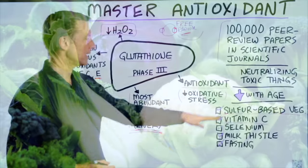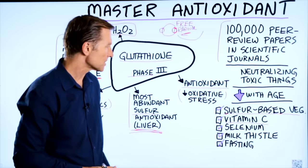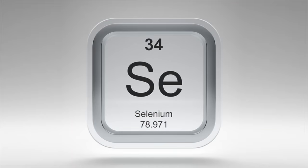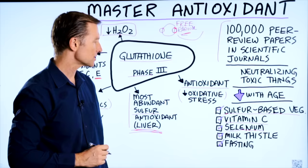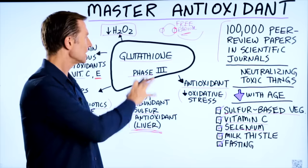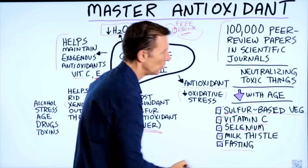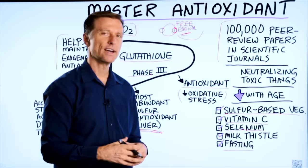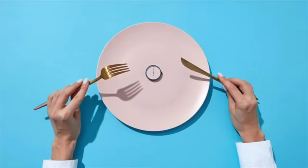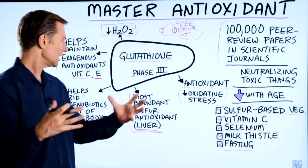Also, getting enough vitamin C from vegetables will help you make more glutathione. Selenium is a good trace mineral to help build up glutathione as well. Milk thistle strengthens the liver cell so your body can make more glutathione. And fasting will increase the network of antioxidants in the body — which is quite fascinating, because you would think not eating would shrink the antioxidant pool. It does just the reverse: it increases.